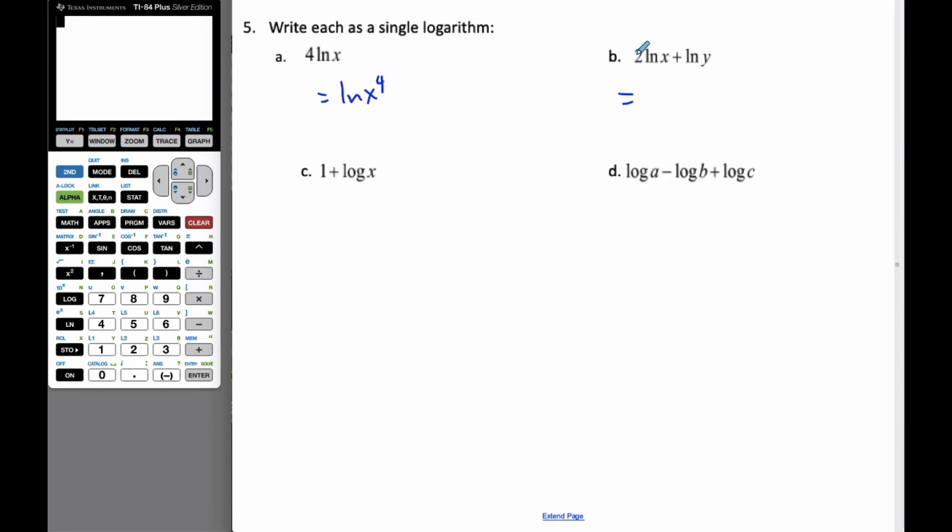Here, for a single logarithm, the 2 can go up to the exponent: ln x² plus ln y. And then if I add these two together, it means I'm going to actually multiply the two inside.